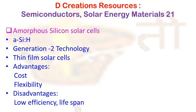Welcome to Decreation's resources. Let's talk about amorphous silicon cells. It is comparatively easy to produce amorphous silicon compared to crystalline silicon. Amorphous silicon is also called alpha silicon, so you might see the symbol alpha-Si.